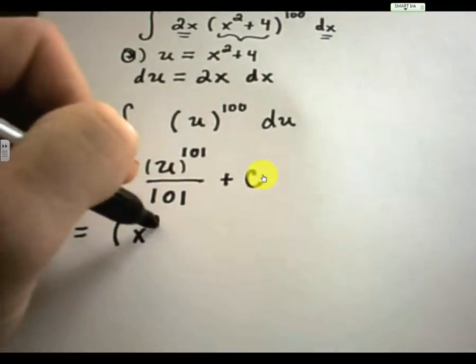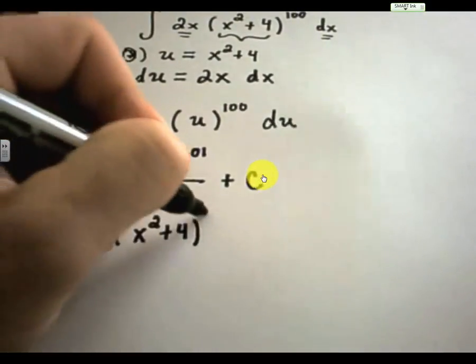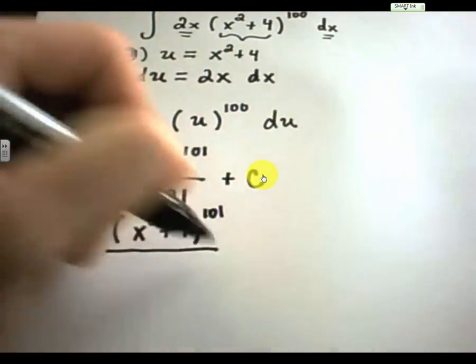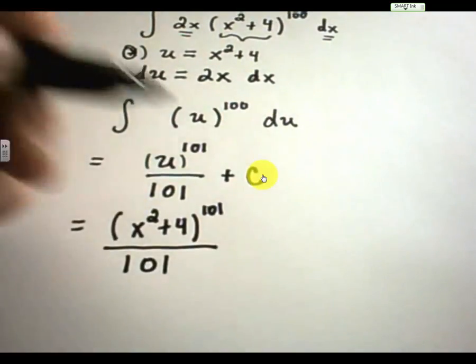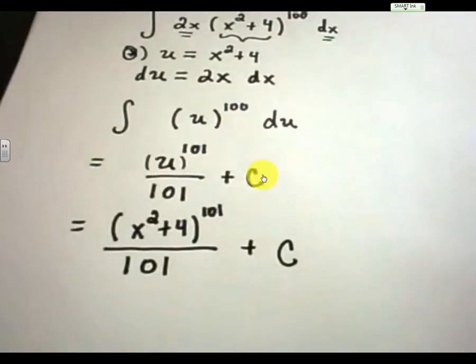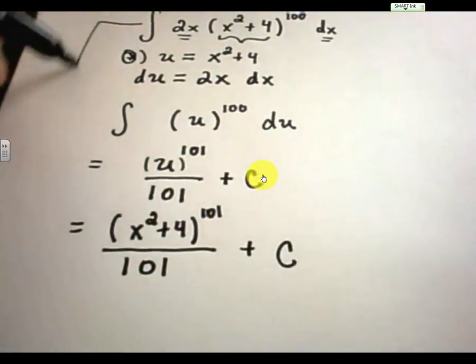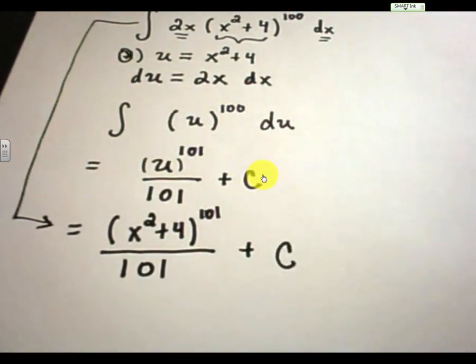And now the idea is just a basic integration problem. You've got a variable raised to the 100th power. It's just like having x raised to the 100th. Well, you'll get u to the 101, you have to add 1 to the power, divide by that new power, plus c. And then the idea is, since you started with x's, you want to stop with x's. You can just use your original substitution and plug that back in.